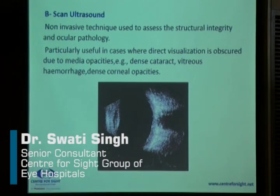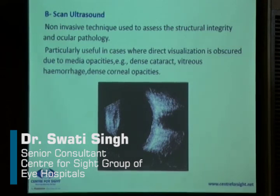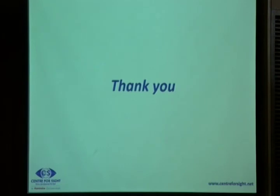Lastly, B-scan ultrasound is a non-invasive technique used to assess the structural integrity of the eye and ocular pathology. It is especially useful when there are dense media opacities like dense corneal opacity, mature cataracts, or vitreous hemorrhage where we cannot visualize the posterior segment of the eye. So this was a brief overview of all the super specialities and the diagnostic procedures used by ophthalmologists. Thank you.